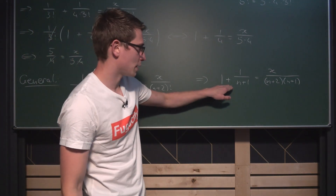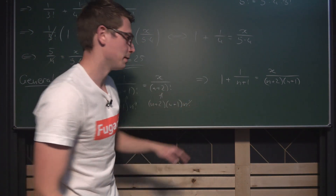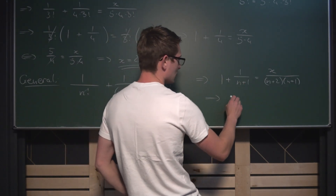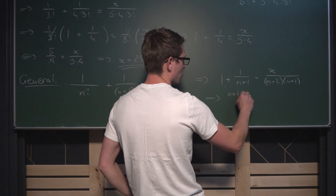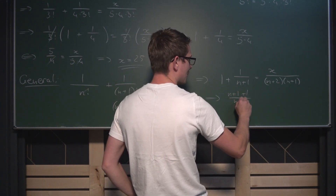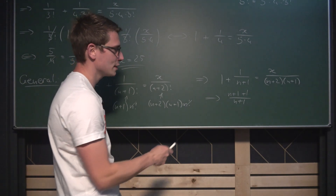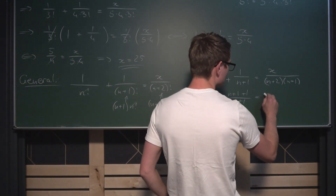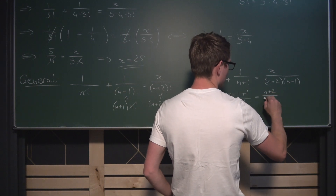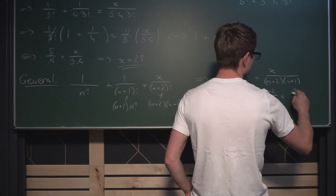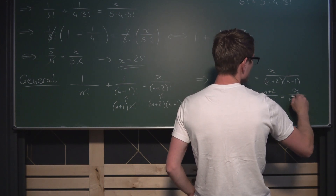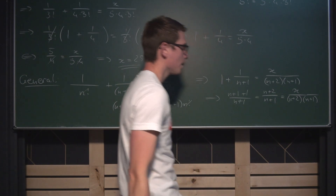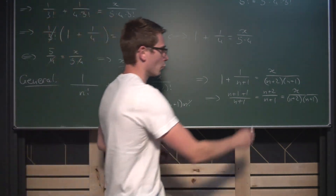What we can do is expand the fraction 1 by multiplying by n plus 1 over n plus 1, then bring everything to a common denominator. Adding those together gives us n plus 1 plus 1 divided by n plus 1. And this is where a bit of magic happens — n plus 1 plus 1 is the same as n plus 2. So we get n plus 2 divided by n plus 1 is equal to x divided by n plus 2 times n plus 1.